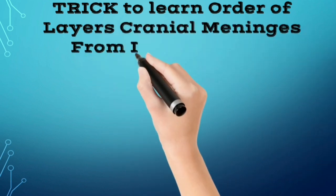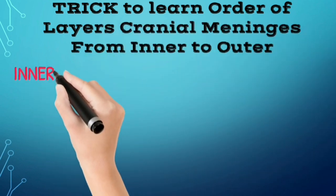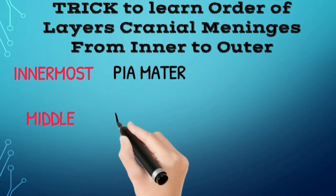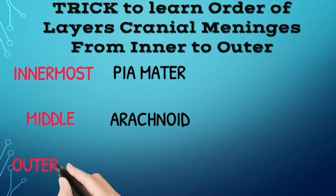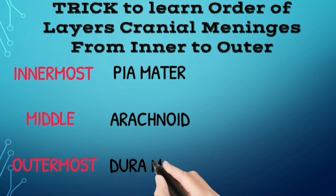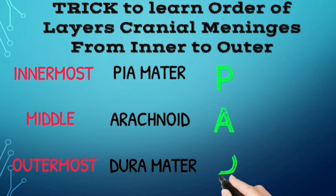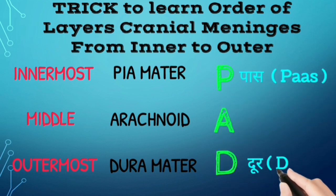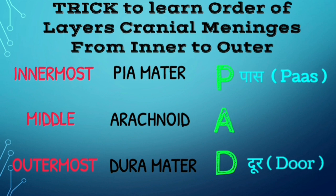The trick to learn the order of layers of cranial meninges from inner side to outer side: the innermost is pia mater, the middle layer is arachnoid, and the outermost layer is dura mater. You can use the mnemonic PAD — P for pia mater, A for arachnoid, and D for dura mater — to remember the layers from inner to outer.